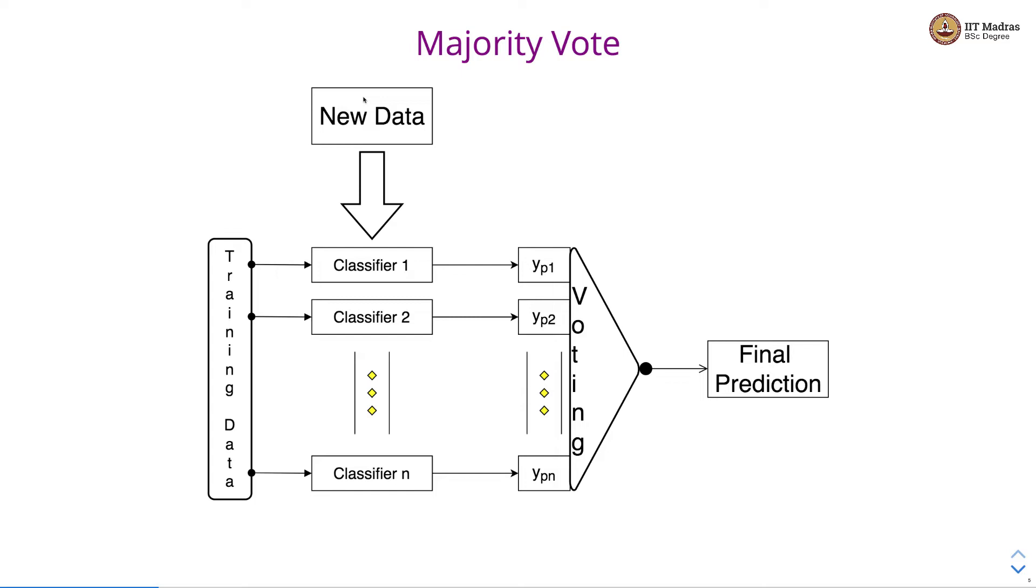Similarly, in case of regression, we take the training data for regression and train n different regressors. And whenever we get new data, we get prediction for regression output from n regressors. We average prediction across these n regressors to obtain the final prediction from the ensemble.